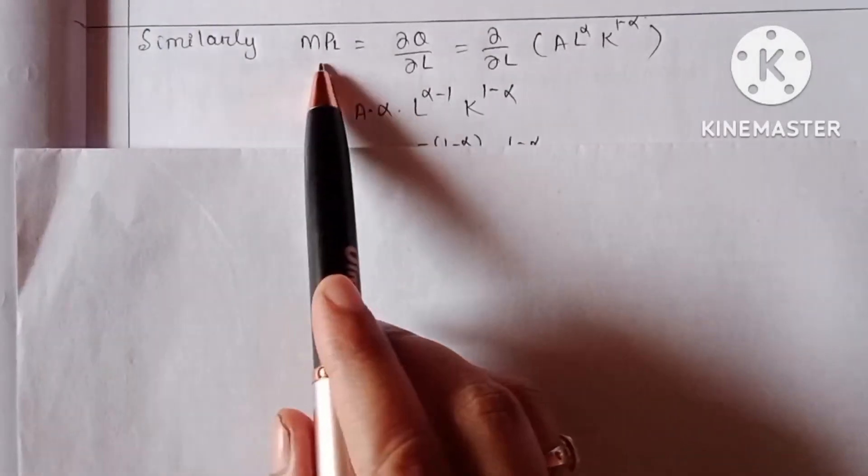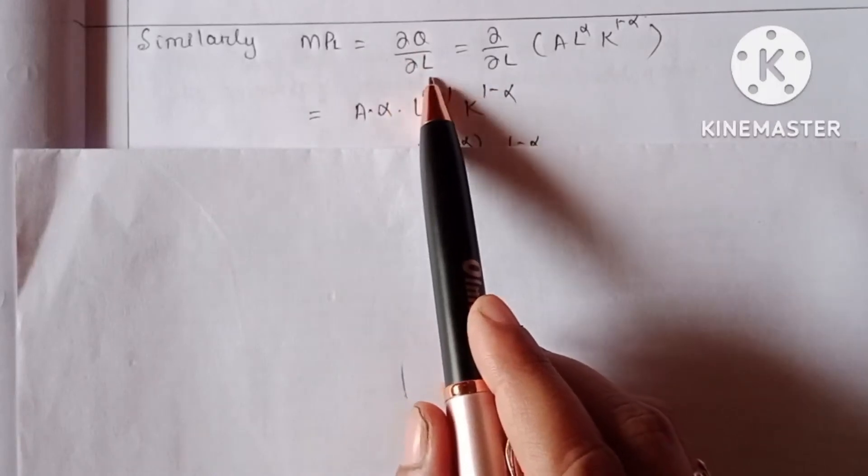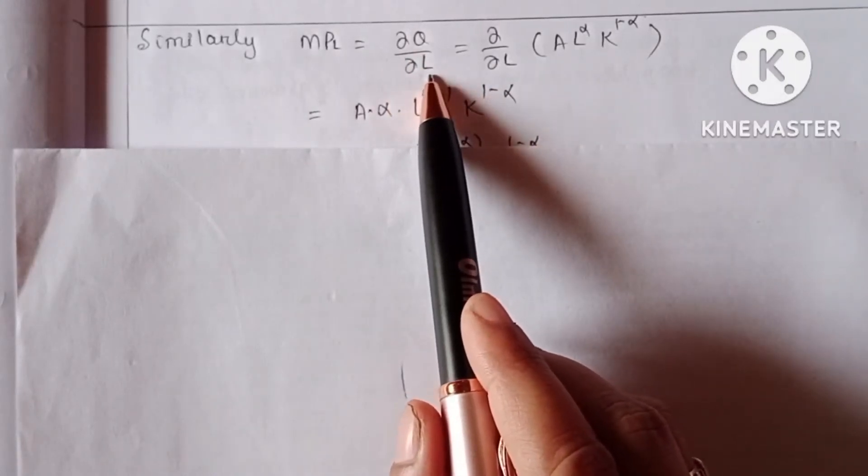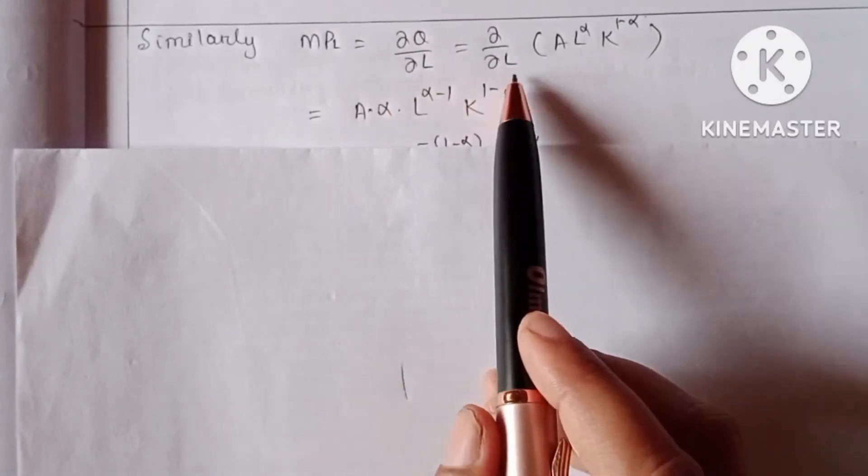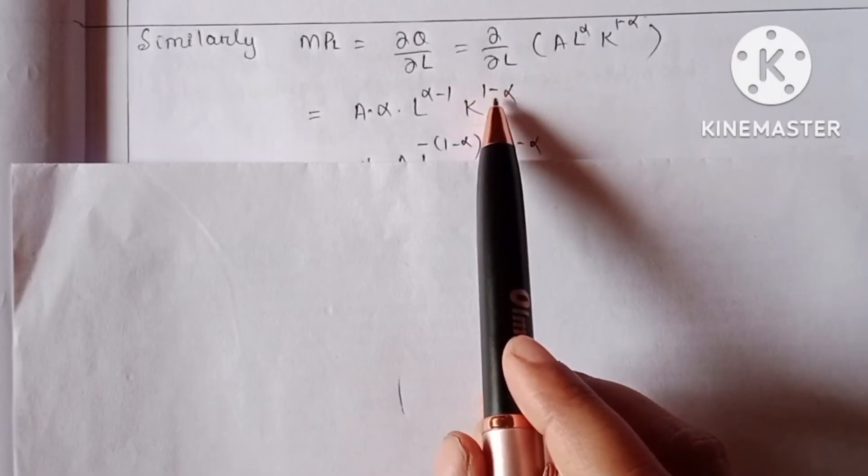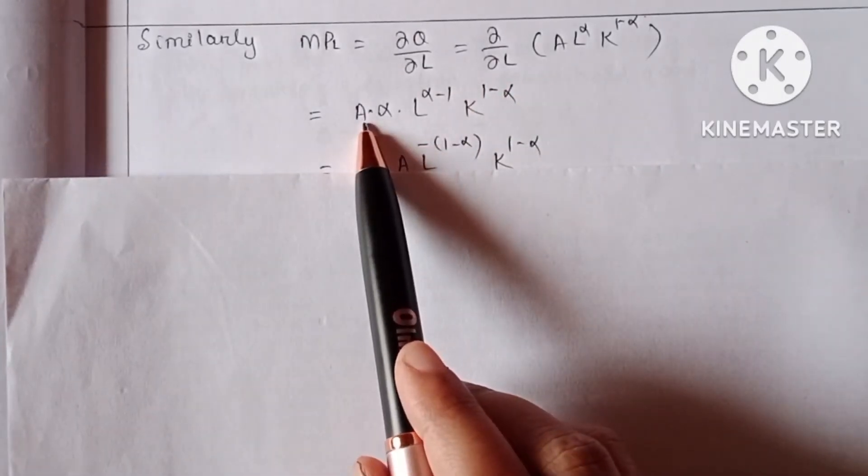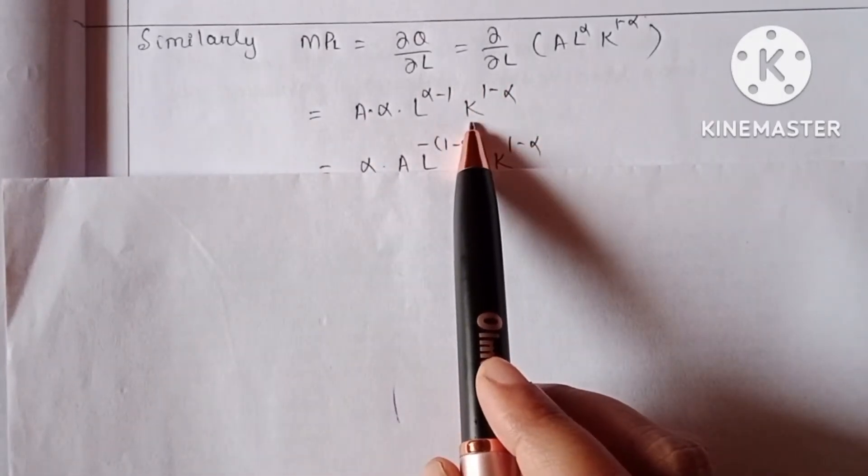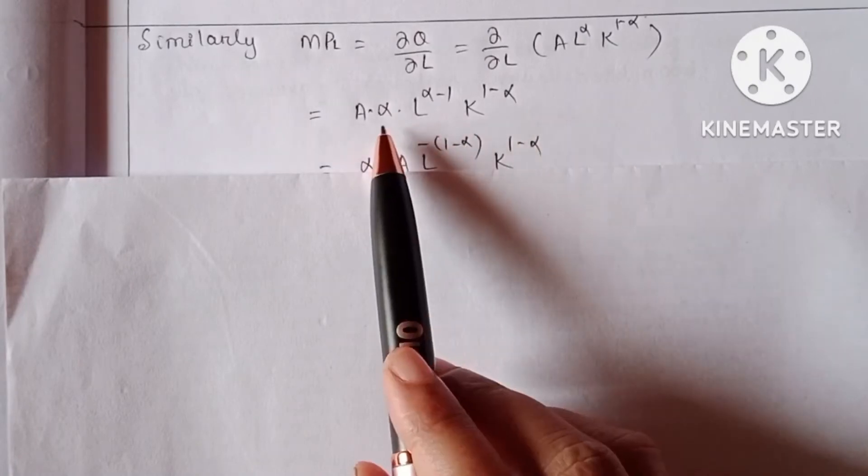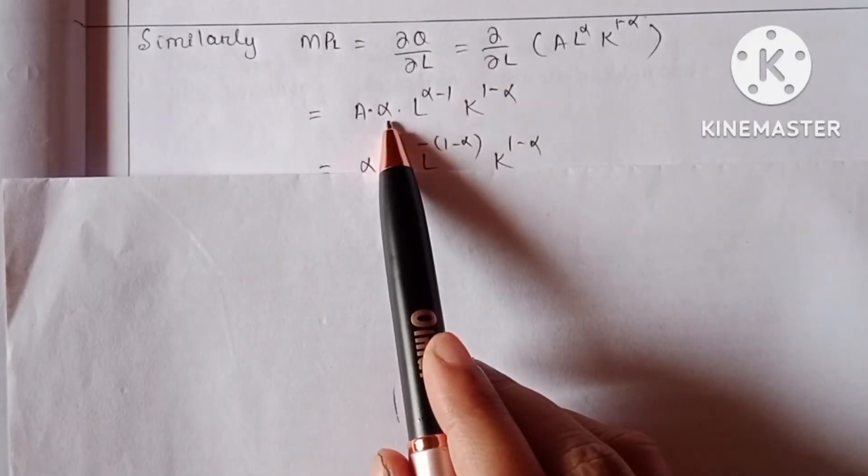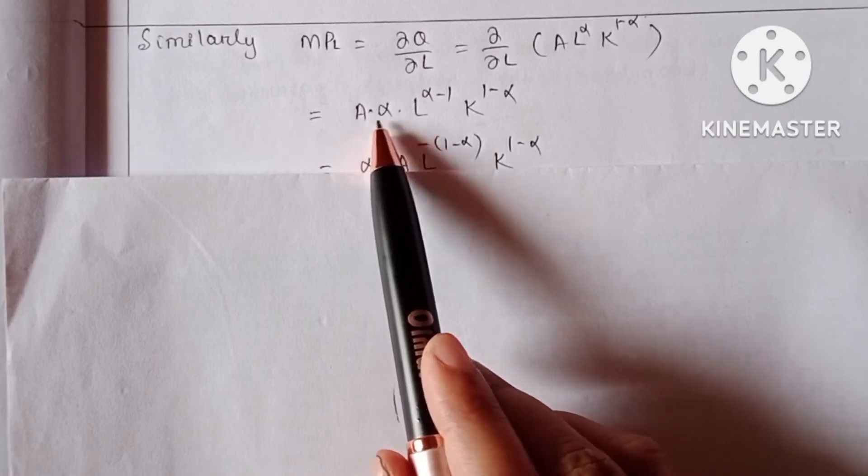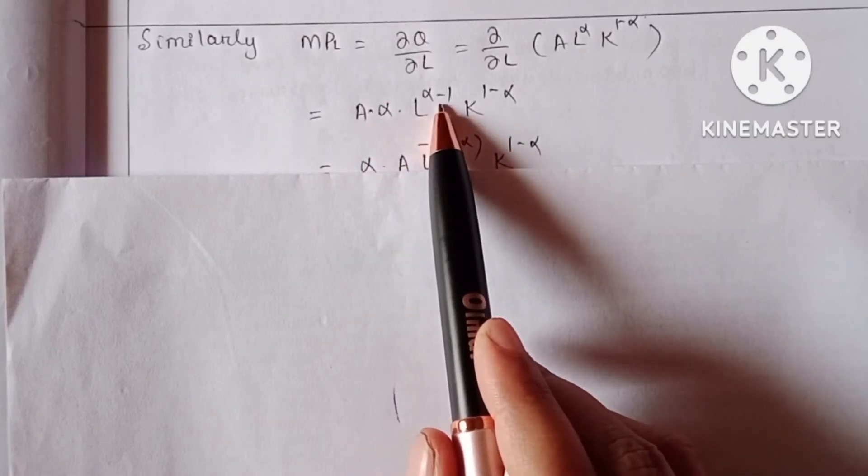Similarly, marginal productivity of labor equals δQ/δL. This is the partial derivative of Q with respect to L. A and K are constants here. By applying the function rule, we will get A·α·L^(α-1)·K^(1-α).